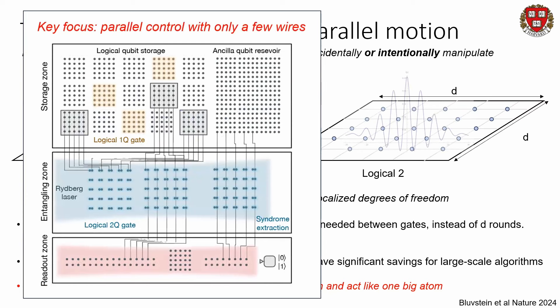Leveraging these techniques, we've started doing experiments with what I would call our first generation logical processor, where we've segmented the system into multiple zones: a storage zone, an entangling zone, and a readout zone. Atoms can be stored for very long times in the storage zone due to their long coherence time. If we want to pick up two logical qubits and entangle them on demand, we just pick up two grids, move them into the entangling zone, pulse one global laser pulse, and in this way entangle them in a single step.